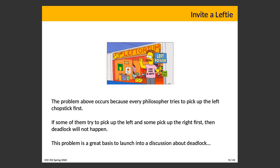It only happens when our timing is unfortunate. It occurs because every philosopher tries to pick up the left chopstick first, and not only that, at the same time. It turns out that one solution is to invite a left-handed person to the table: if a right-handed person picks up the left chopstick first and then the right one, but a left-handed person does the opposite, then deadlock will not occur. It's worth noting that if everybody at the table is left-handed, we have the exact same problem as if everyone is right-handed. What is important is that at least one person is left-handed and at least one is right-handed.